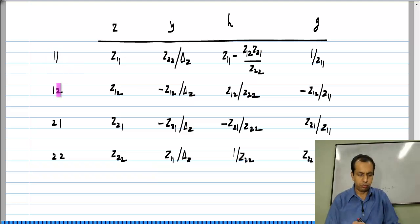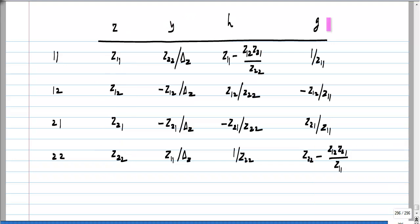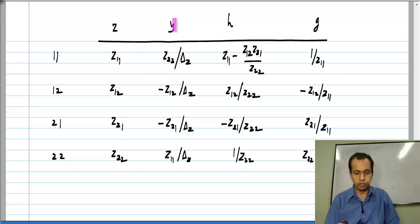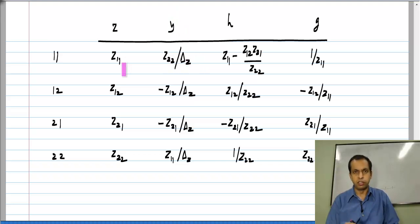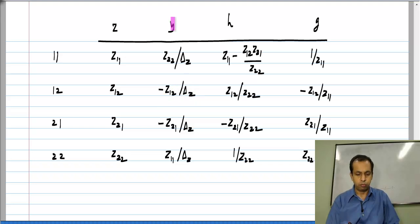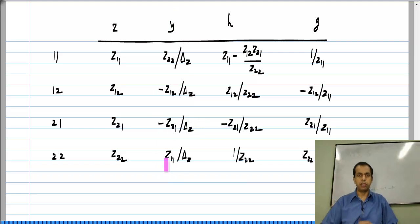For instance, by inverting the 2×2 matrix, Y11 turns out to be Z22 divided by ΔZ, where ΔZ means the determinant of the Z parameter matrix. Similarly, Y12 turns out to be minus Z12 divided by ΔZ, Y21 is minus Z21 divided by ΔZ, and Y22 is Z11 divided by ΔZ.